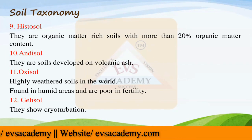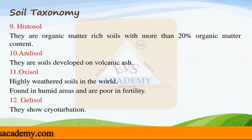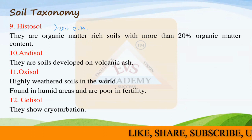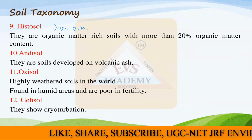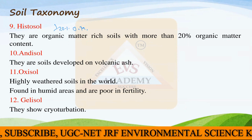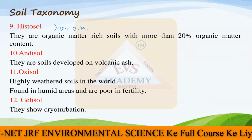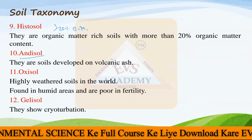Then we have the next soil order: Histosols. They are organic matter-rich soils with more than 20% organic matter. This is the key thing about Histosols - if the organic matter is more than 20%, then only that particular soil can be categorized under the Histosol category.